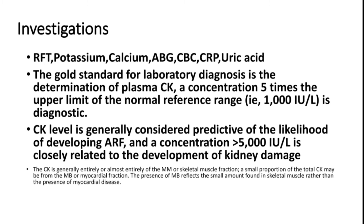Other investigations include urine routine for myoglobin, renal function tests showing elevated creatinine, urea, and potassium, and hypocalcemia on ABG. A complete blood count may show elevated WBC in acute inflammation, and in DIC, platelets may be reduced. CRP will be elevated in most patients, and elevated uric acid can later precipitate uric acid nephropathy.